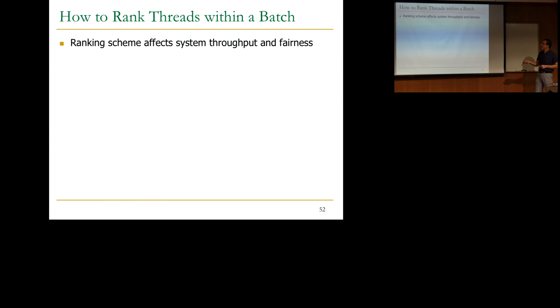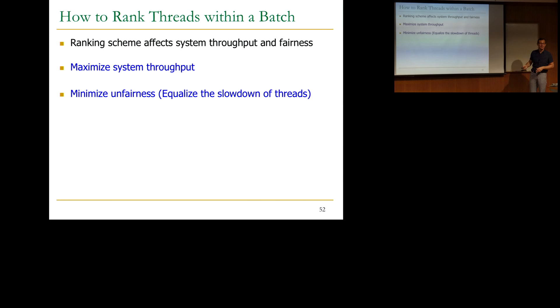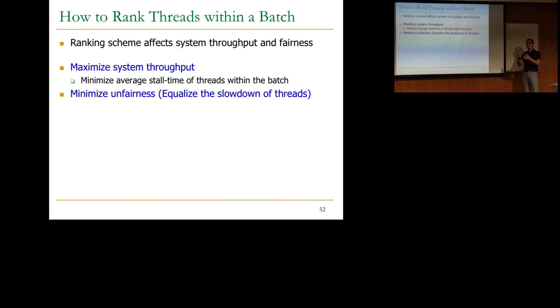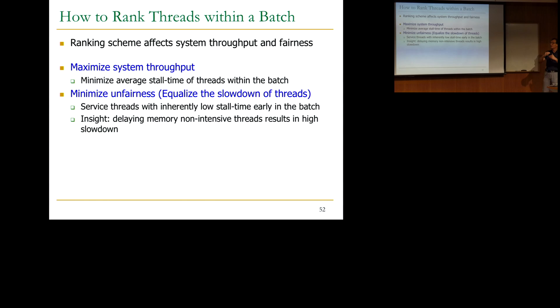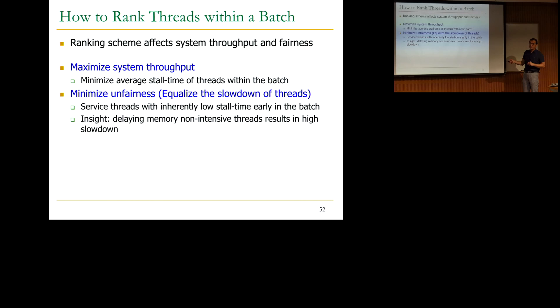How does ranking affect system throughput and fairness? Ideally we want to maximize system throughput and minimize unfairness simultaneously. Our fairness definition is equalizing the slowdown of equal-priority threads. To maximize system throughput, you want to minimize the average stall time of threads within the batch. To minimize unfairness, you should service threads that inherently have low stall time early in the batch. Threads with low stall time are threads that are not very memory-intensive — if you delay them, it results in high slowdown for them.